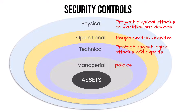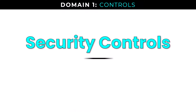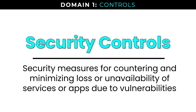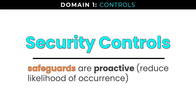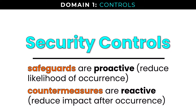Before diving into control types, let's review the definition of a security control. Security controls are security measures for countering and minimizing loss or unavailability of services or applications due to vulnerabilities. Safeguards and countermeasures are often used interchangeably, but to be precise: safeguards are proactive controls that reduce the likelihood of occurrence, while countermeasures are reactive and reduce impact after occurrence of a security event.